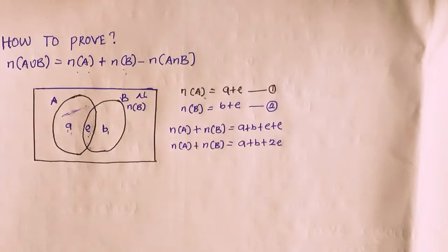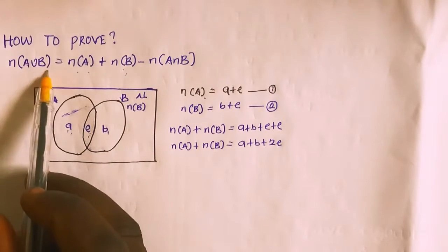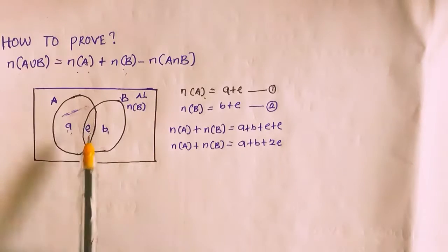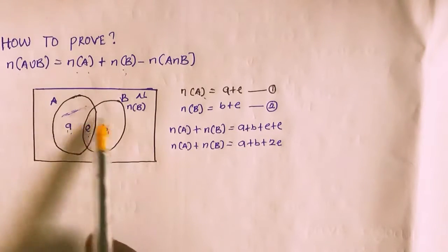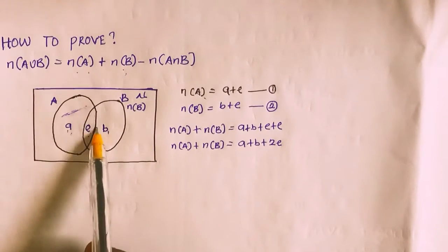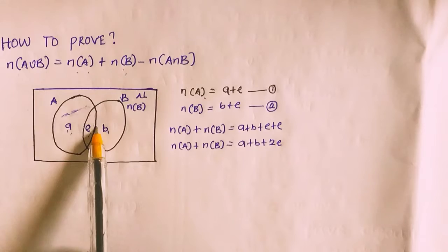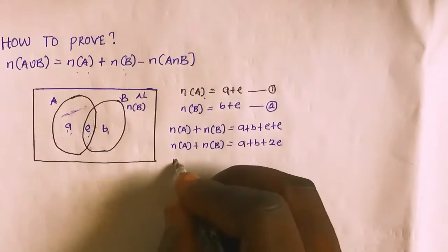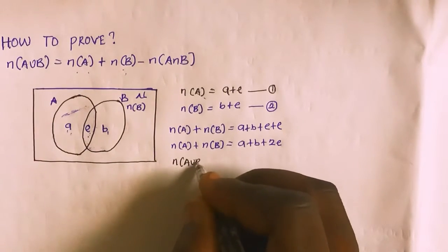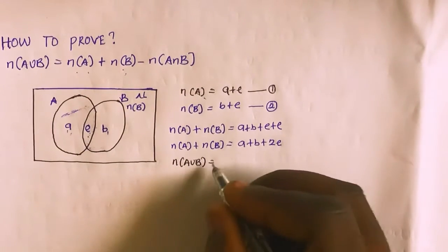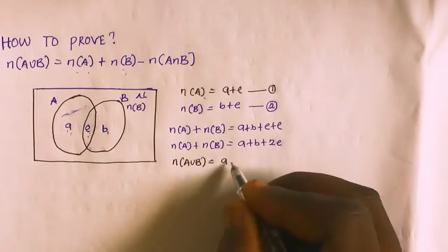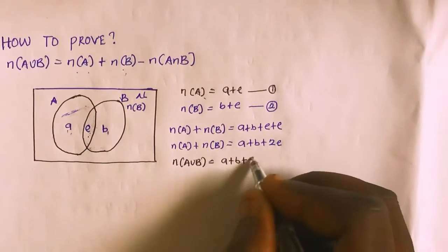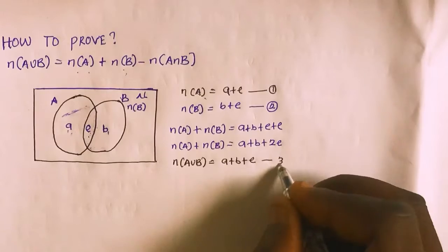If I need to find the cardinality of A union B, that means the total addition of elements present in both circles. This is represented as cardinality of A union B equals A plus B plus E. I'll call this equation 3.